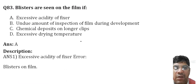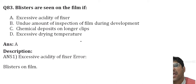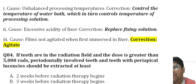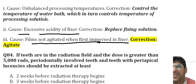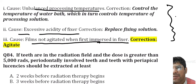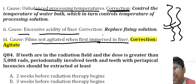Blisters on film can be caused by excess acidity of the fixer, films not being agitated when immersed in fixer, or due to unbalanced processing temperature. Remember these causes and the correction techniques for your entrance exam.